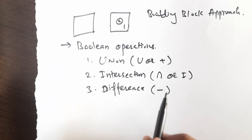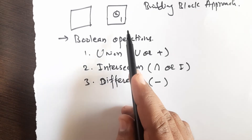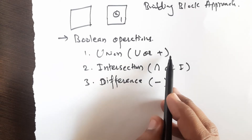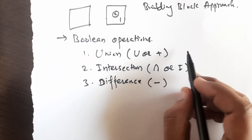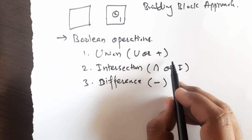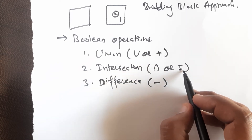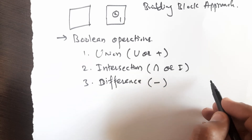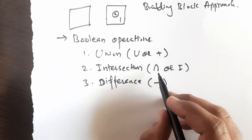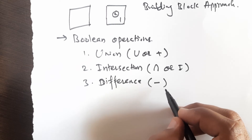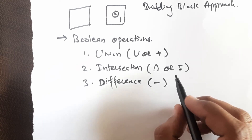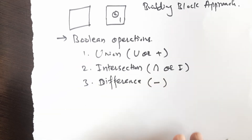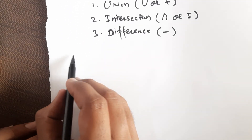These Boolean operations are used to create the required geometry. Union is used to combine two primitives together. Intersection is used to get the common volume from two entities — if two primitives overlap, intersection gives you the common part. Difference is used to subtract one primitive from another.